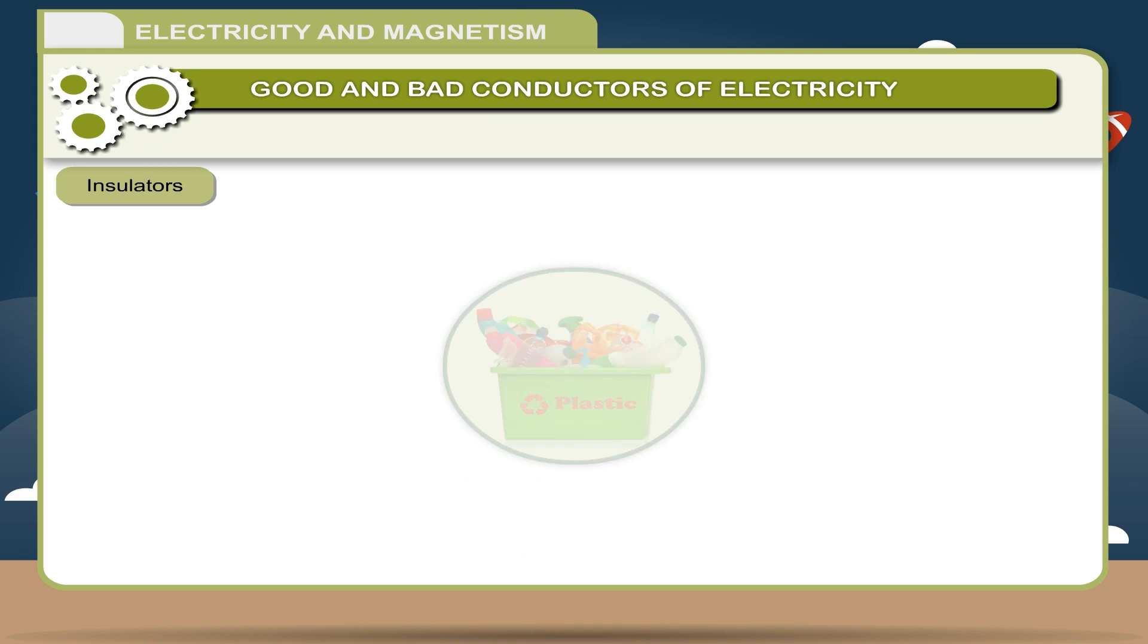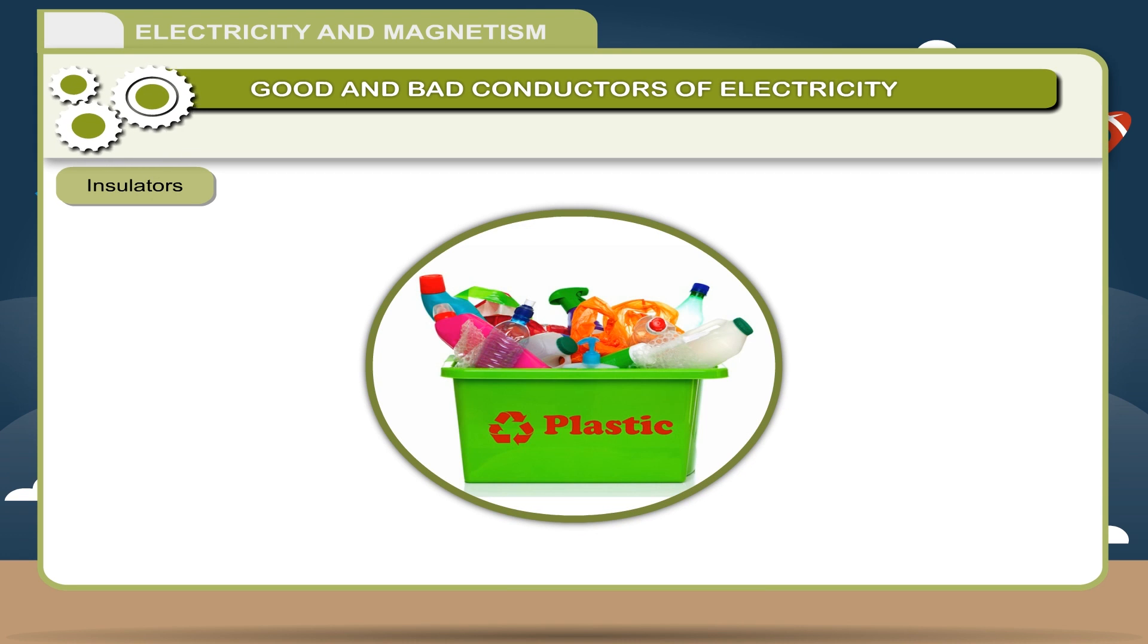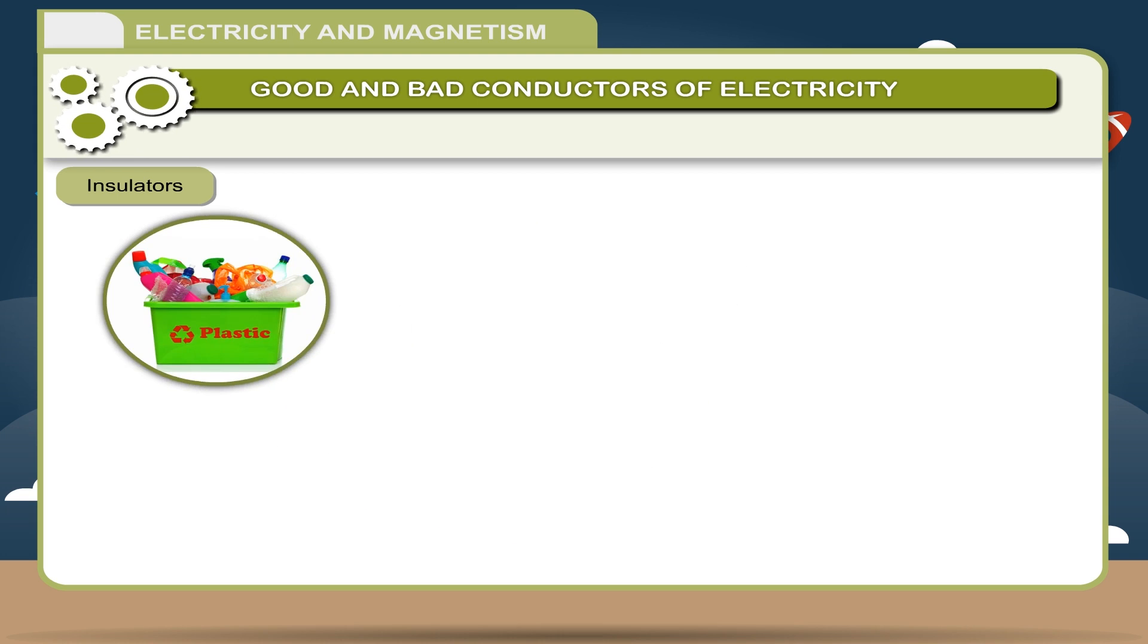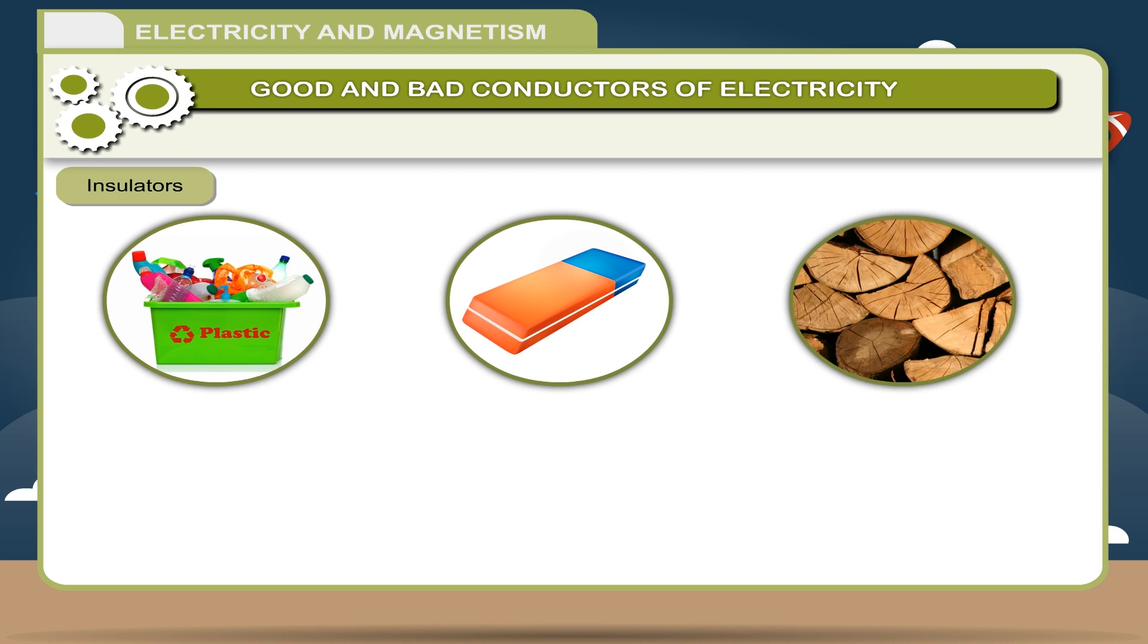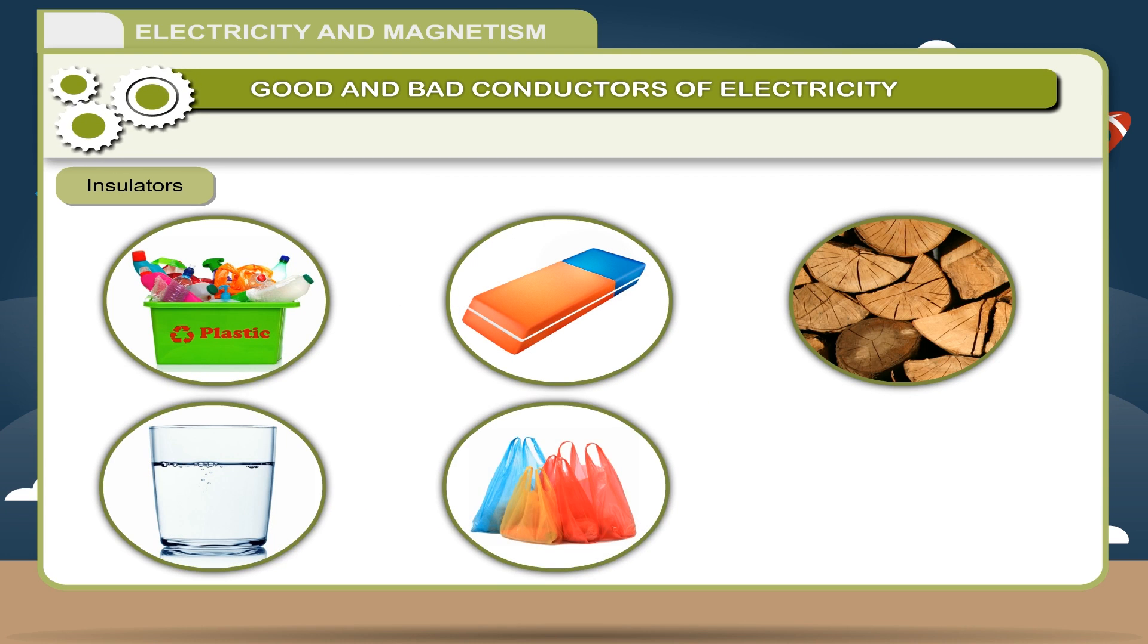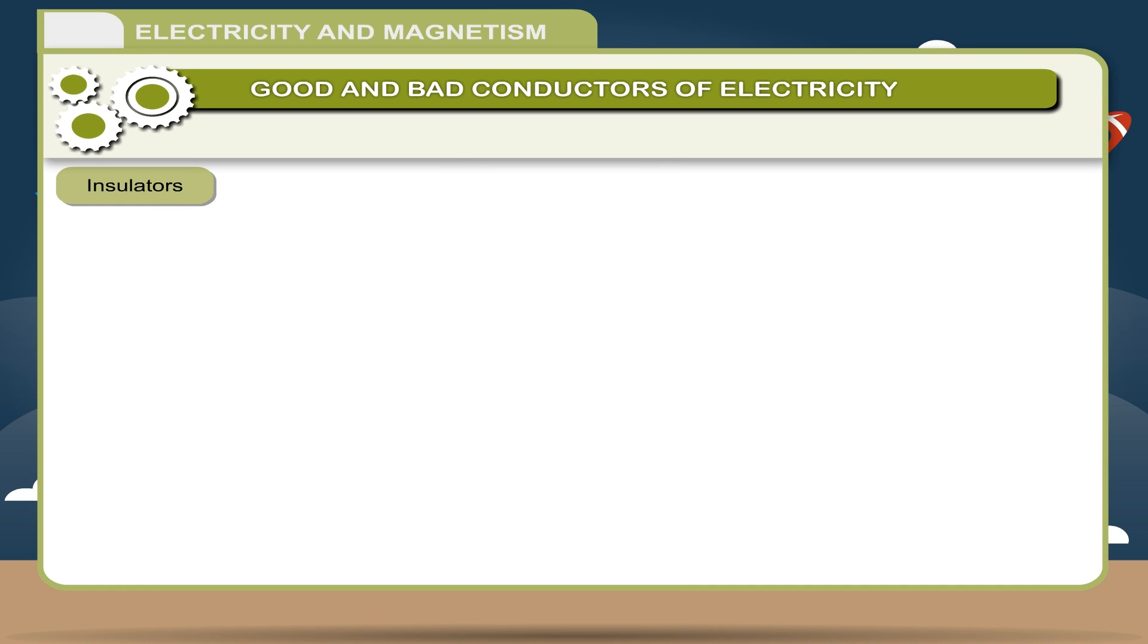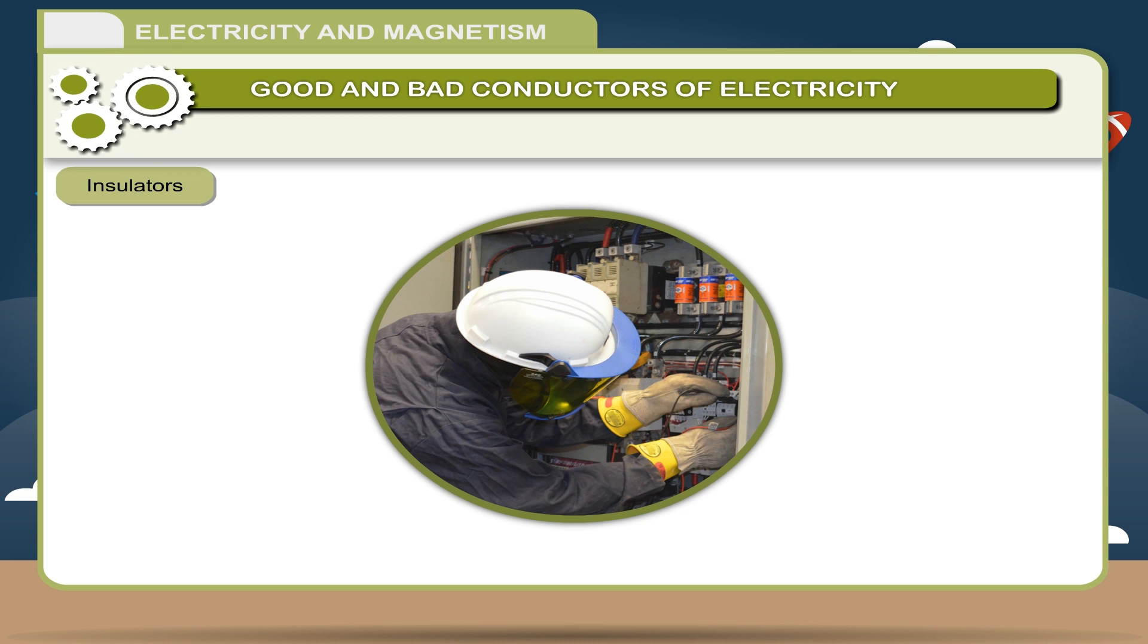Insulators. Those materials which do not allow electric current to pass through them are called insulators. Materials such as plastics, rubber, wood, glass, polythene, PVC, etc. are insulators. You might have observed that electrician uses rubber gloves by working with electricity because rubber is a bad conductor or insulator that protects from electric shock.